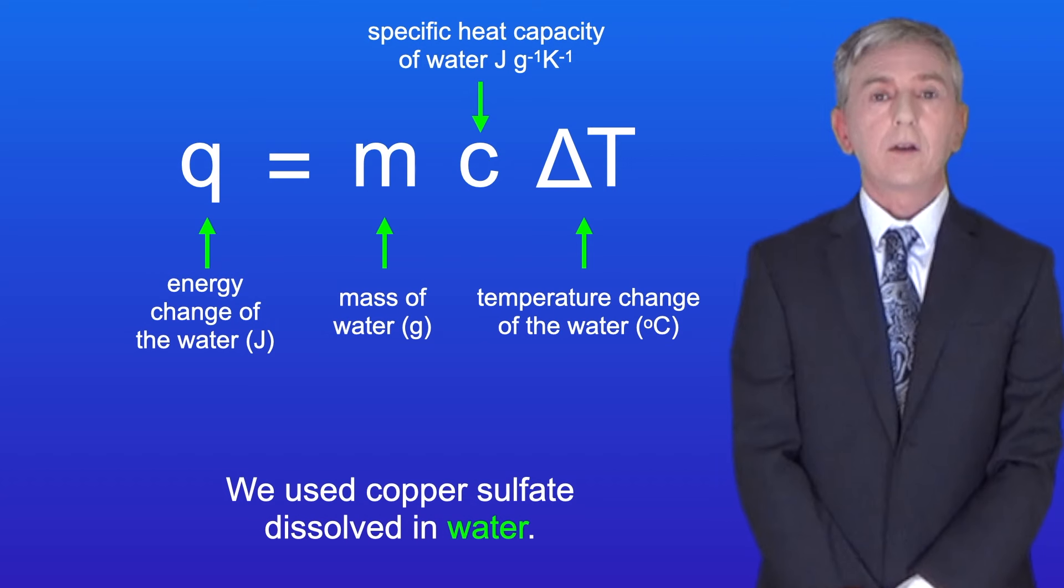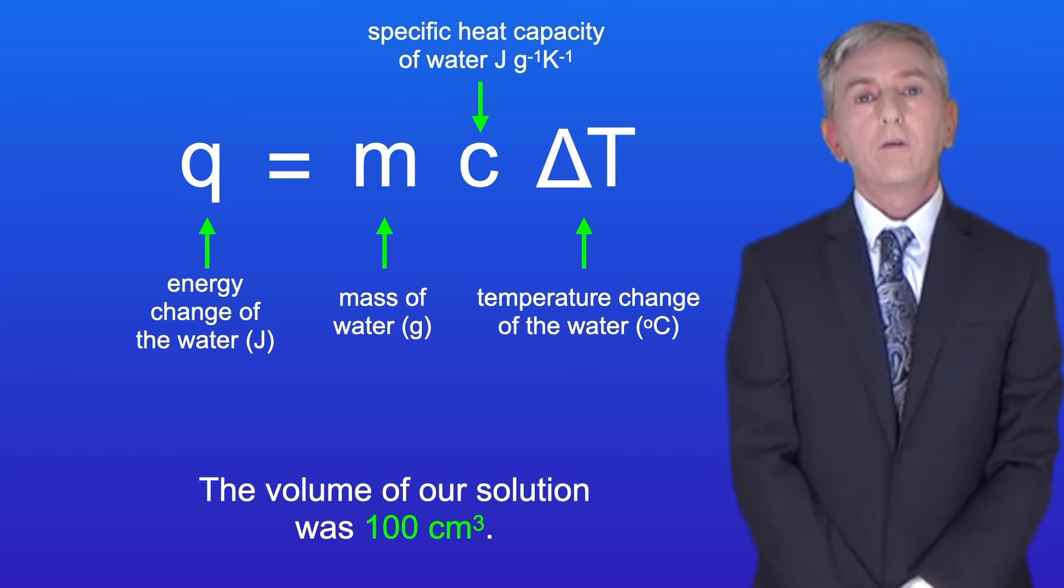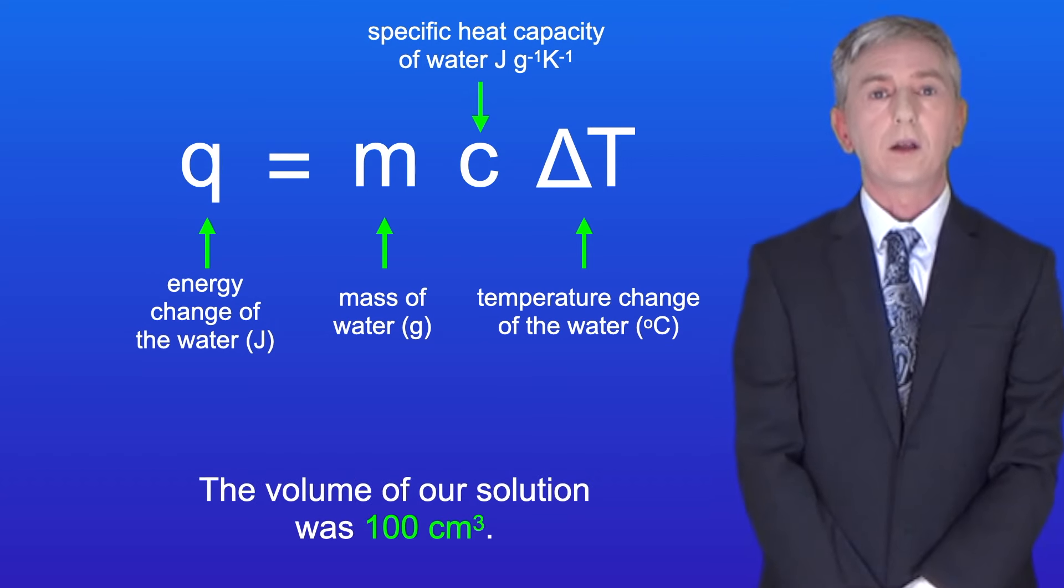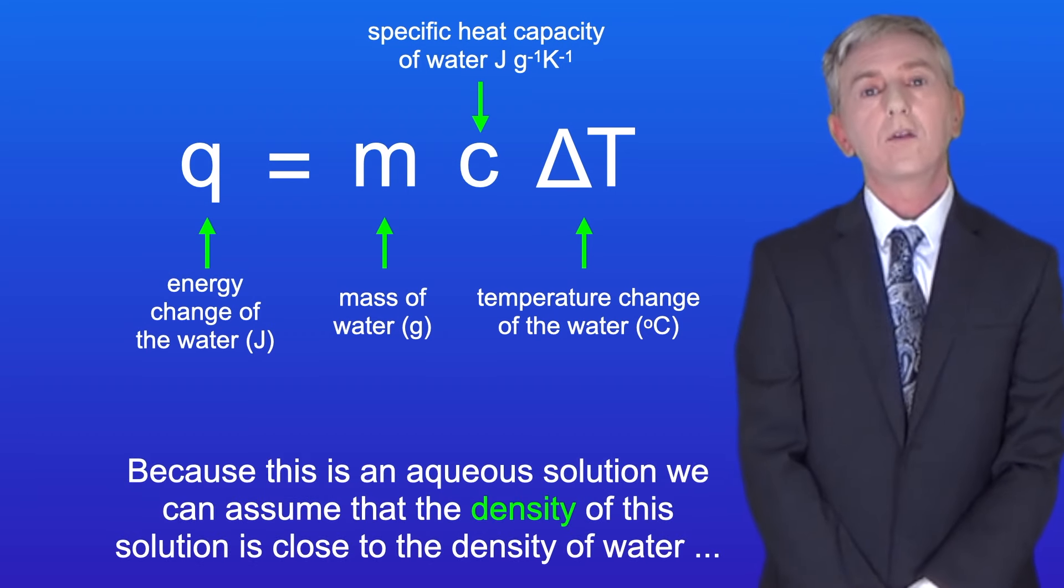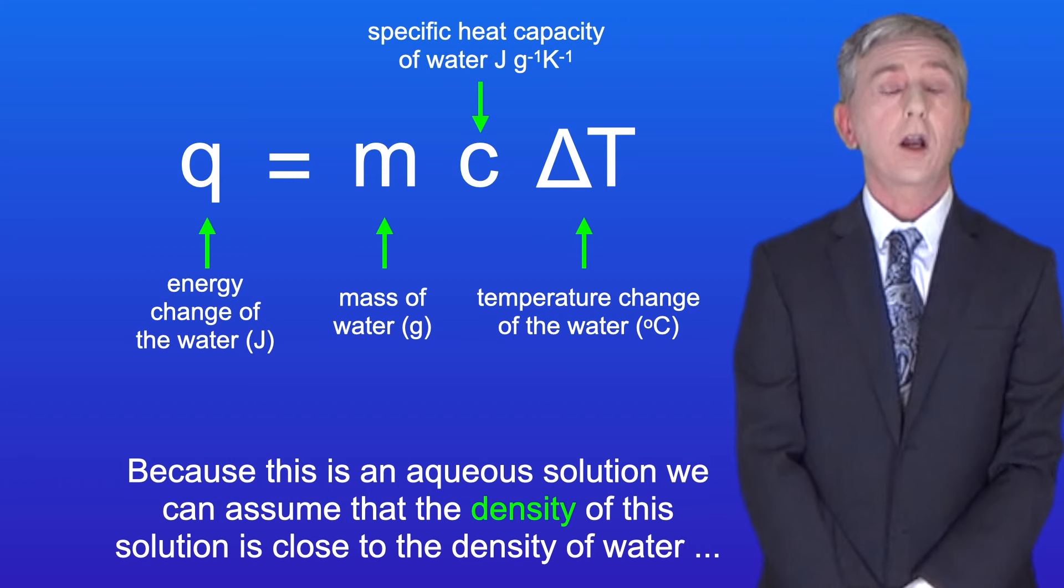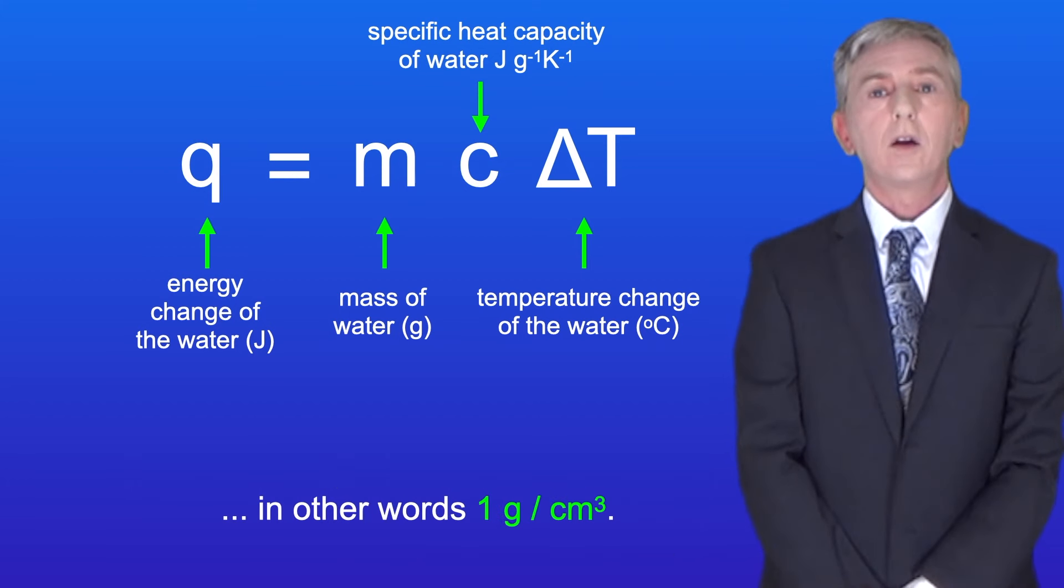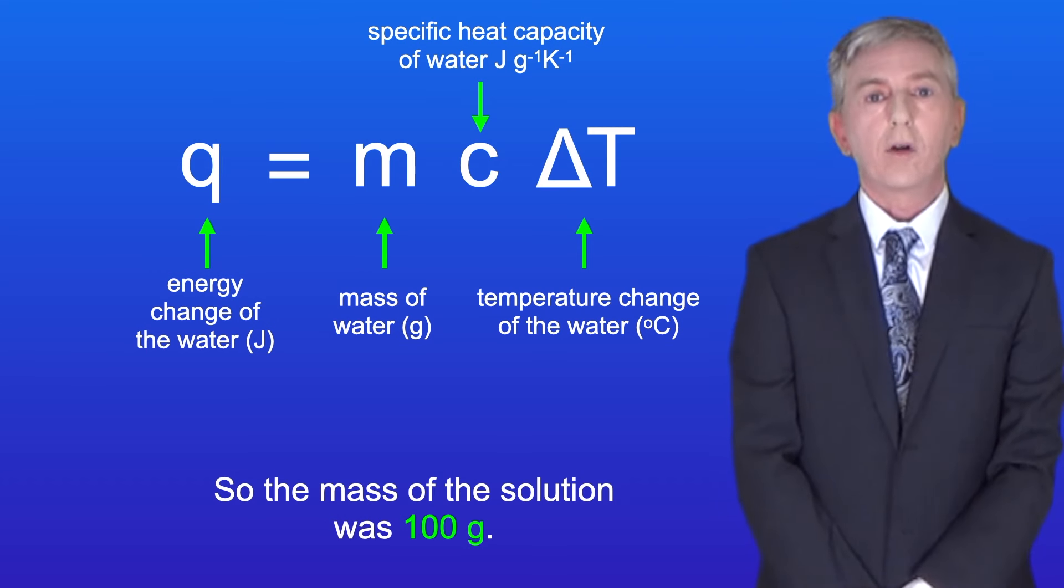We used copper sulfate dissolved in water. The volume of our solution was 100 centimeters cubed. Because this is an aqueous solution, we can assume that the density of this solution is close to the density of water, in other words, 1 gram per centimeter cubed. So the mass of this solution was 100 grams.